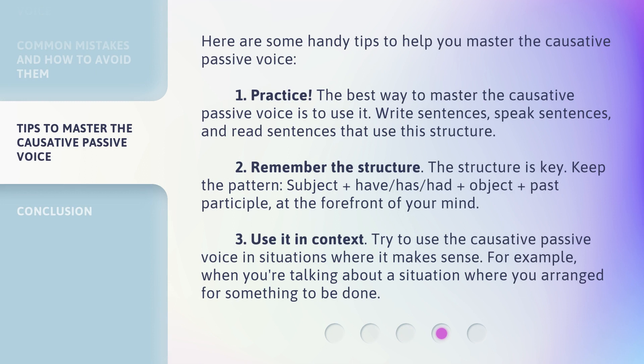Here are some handy tips to help you master the causative passive voice. Number one: practice. The best way to master the causative passive voice is to use it — write sentences, speak sentences, and read sentences that use this structure. Number two: remember the structure. Keep the pattern subject plus have/has/had plus object plus past participle at the forefront of your mind. Number three: use it in context. Try to use the causative passive voice in situations where it makes sense — for example, when you're talking about a situation where you arranged for something to be done.